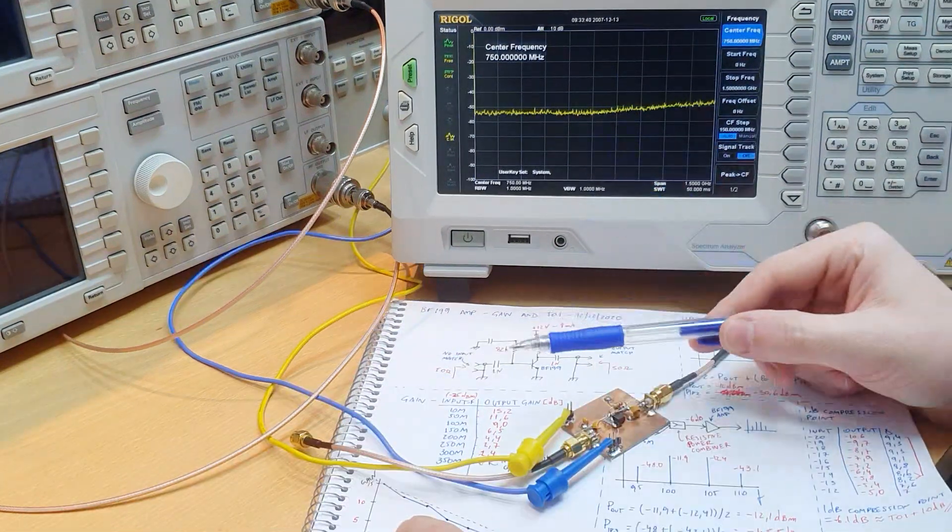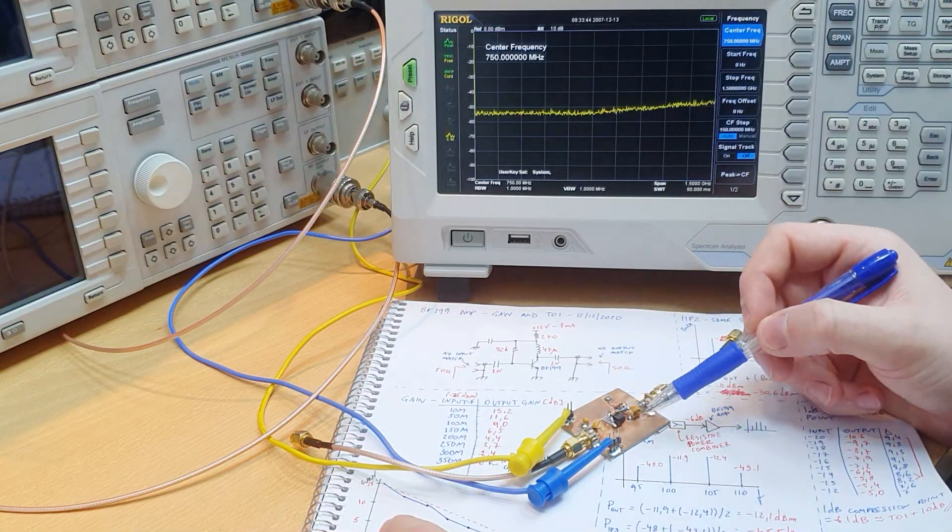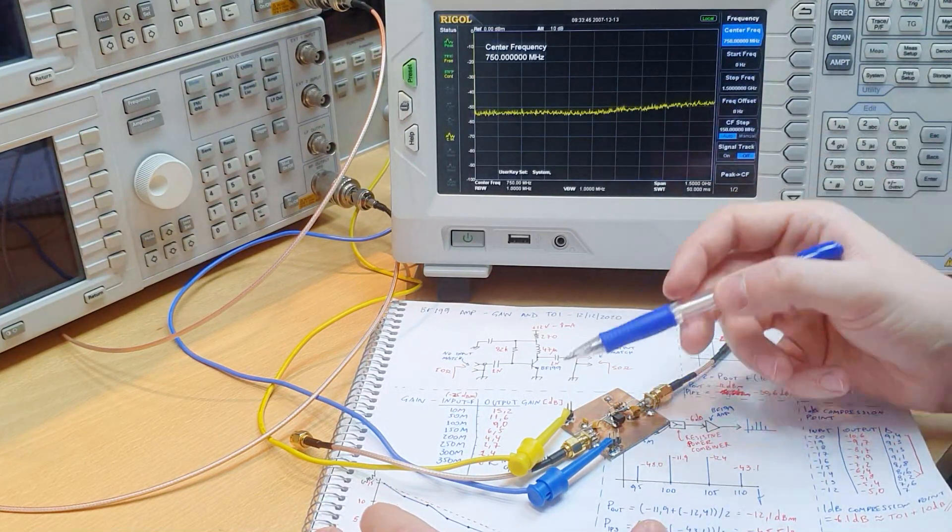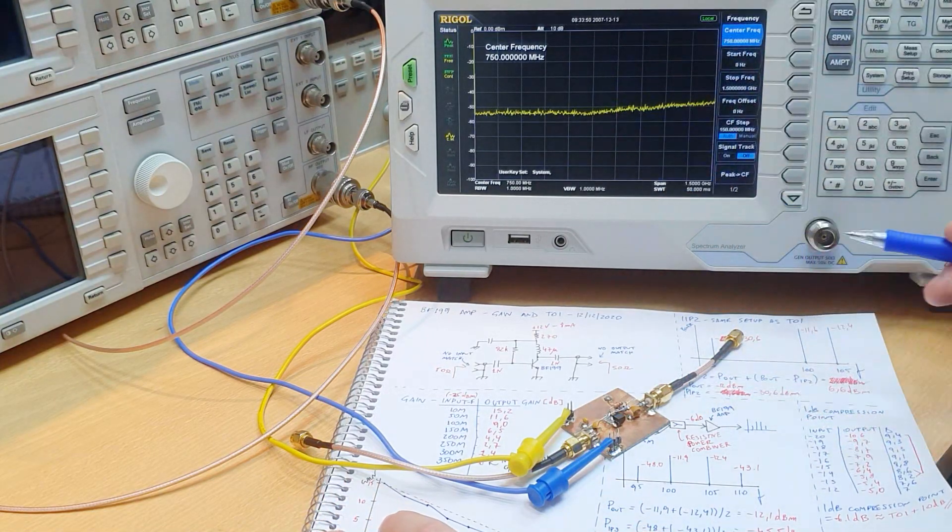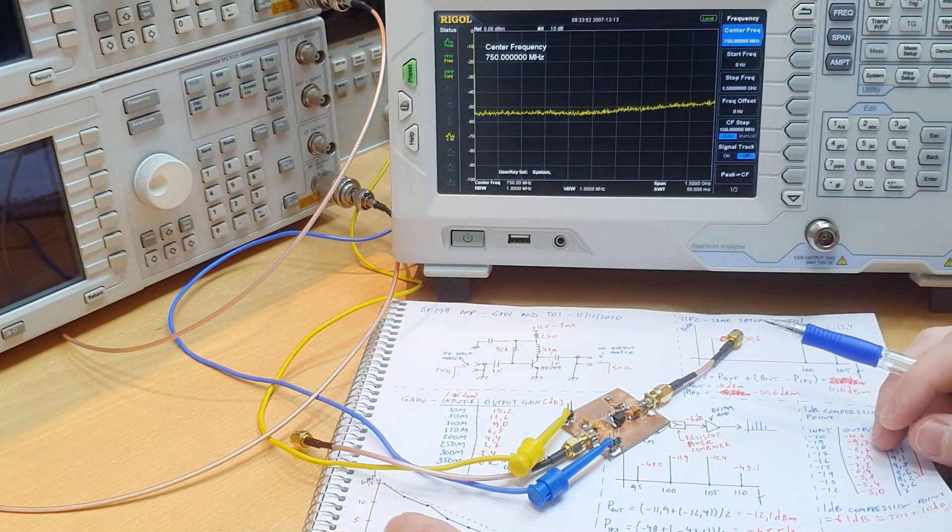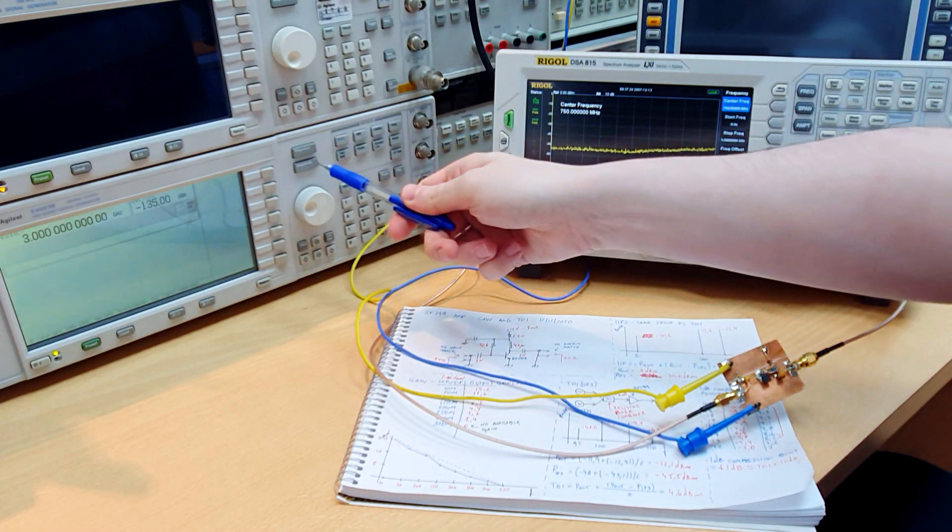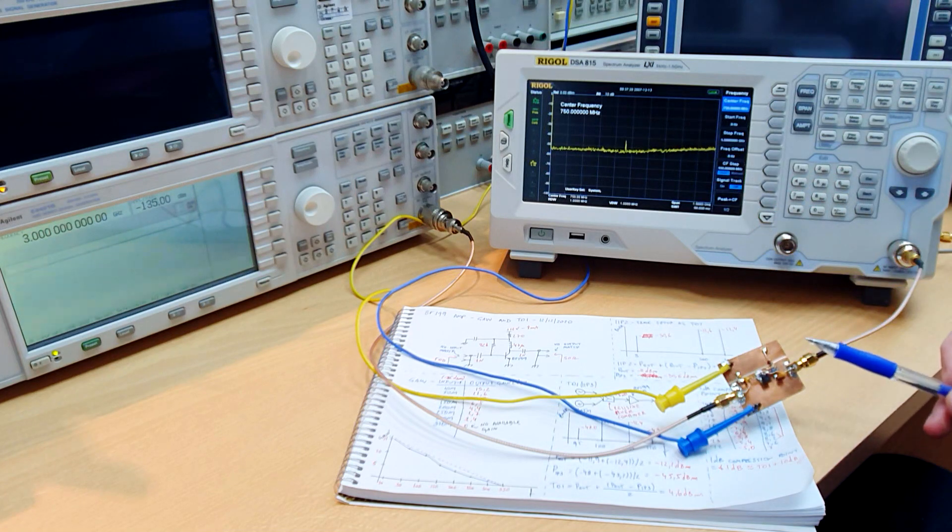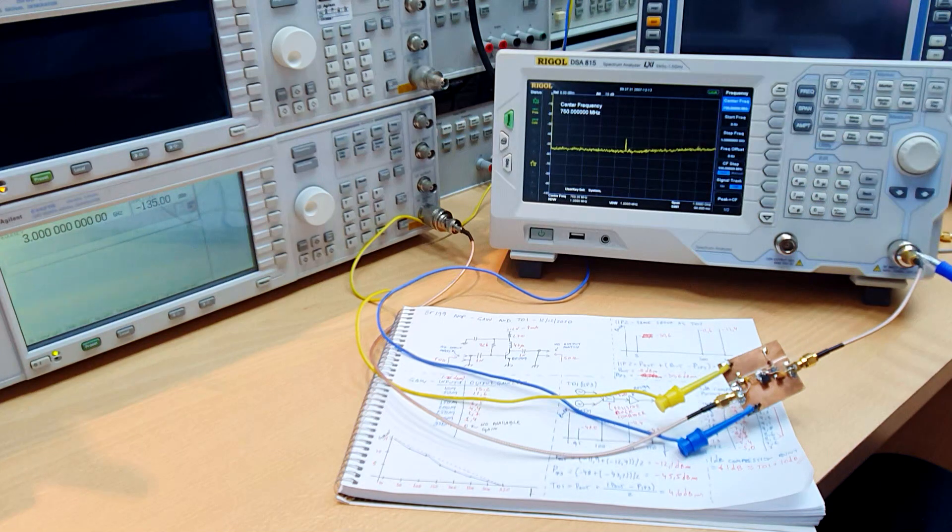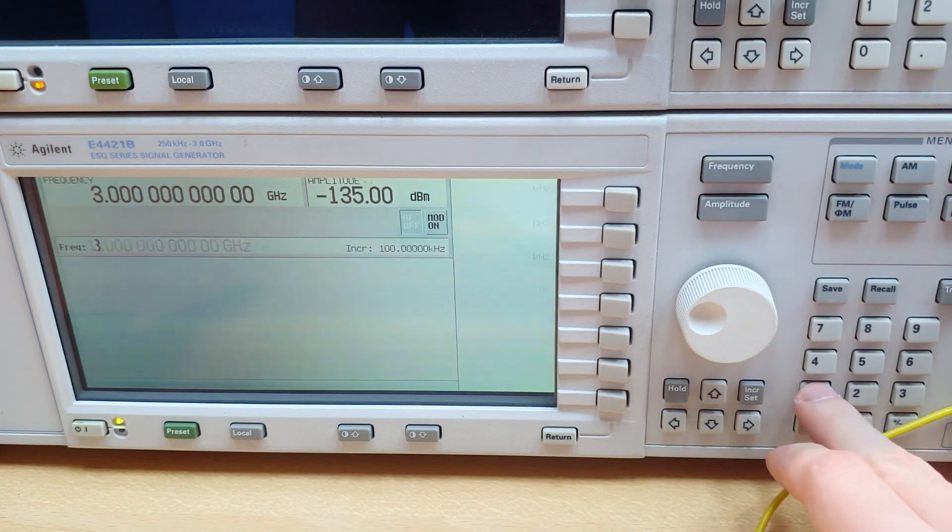We're gonna measure the gain over frequency or the S21 parameter of this amplifier here with a manual sweep, because it's not everybody that has a spectrum analyzer with tracking generator. The basic setup is to connect a signal generator at the input of the amplifier and the output of the amplifier directly to the spectrum analyzer.